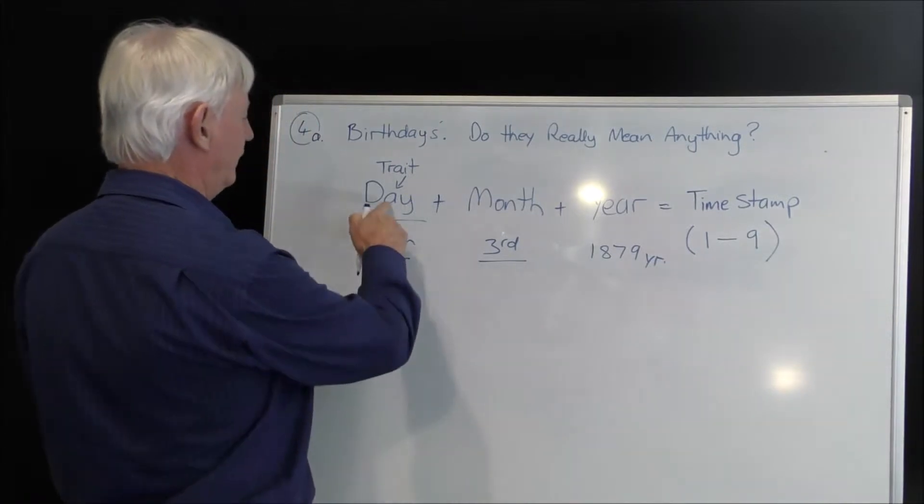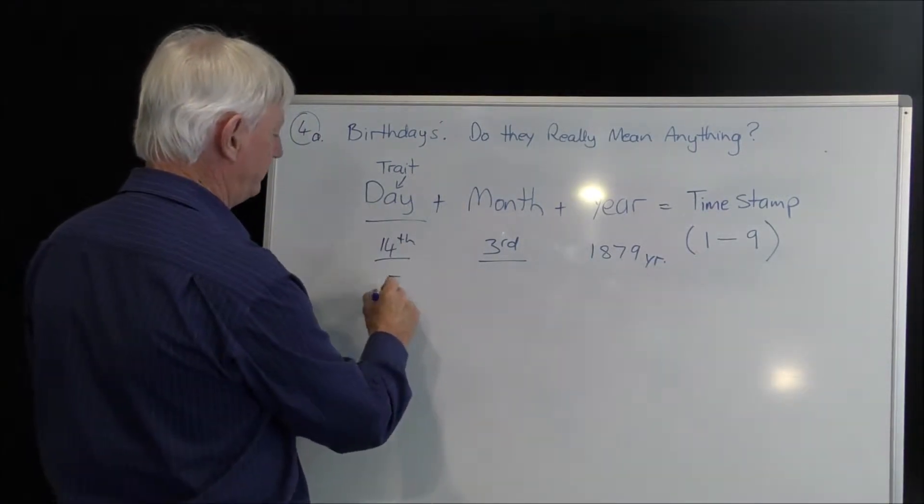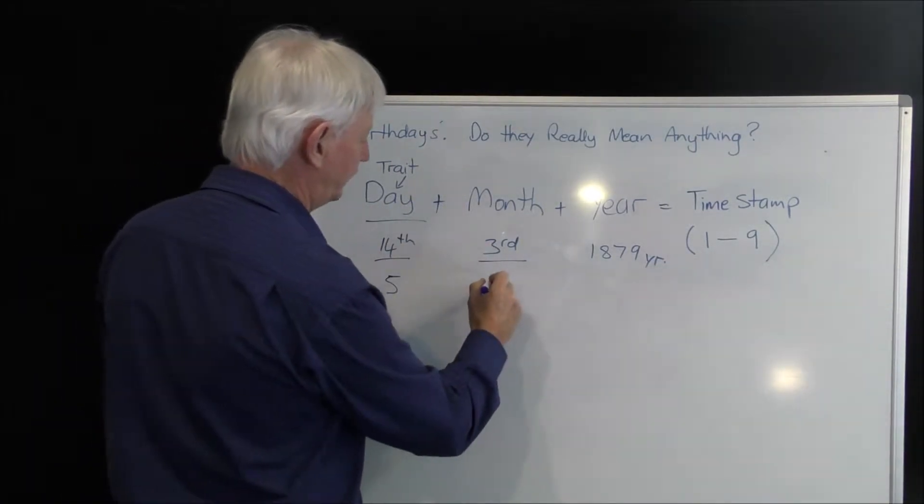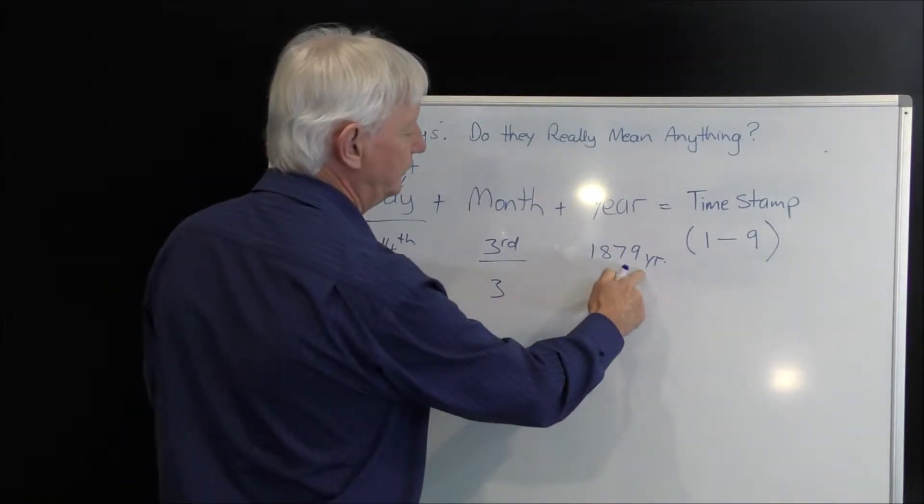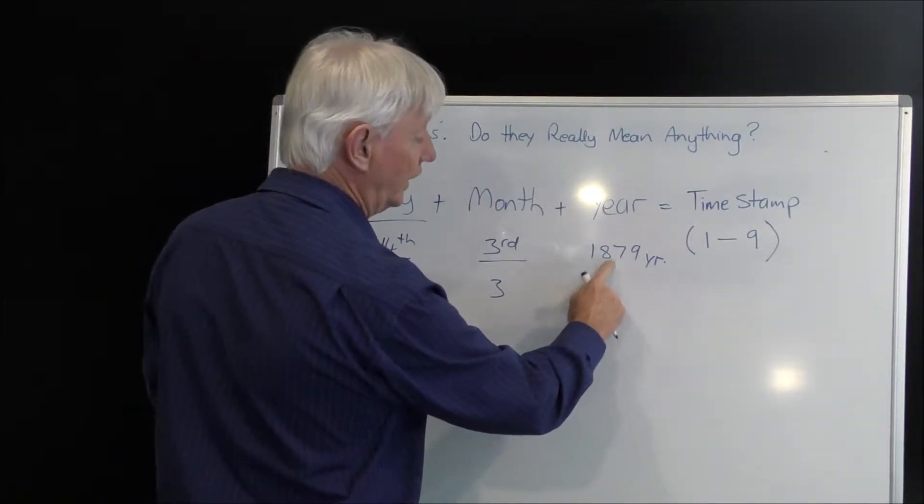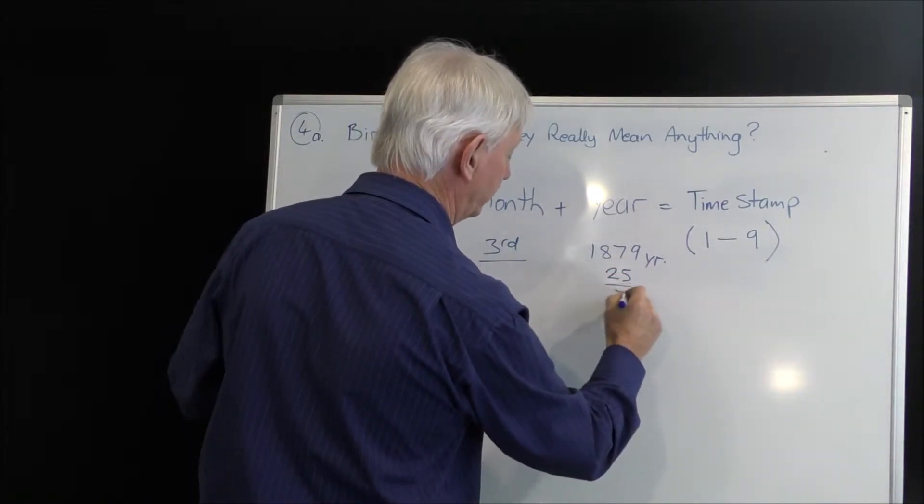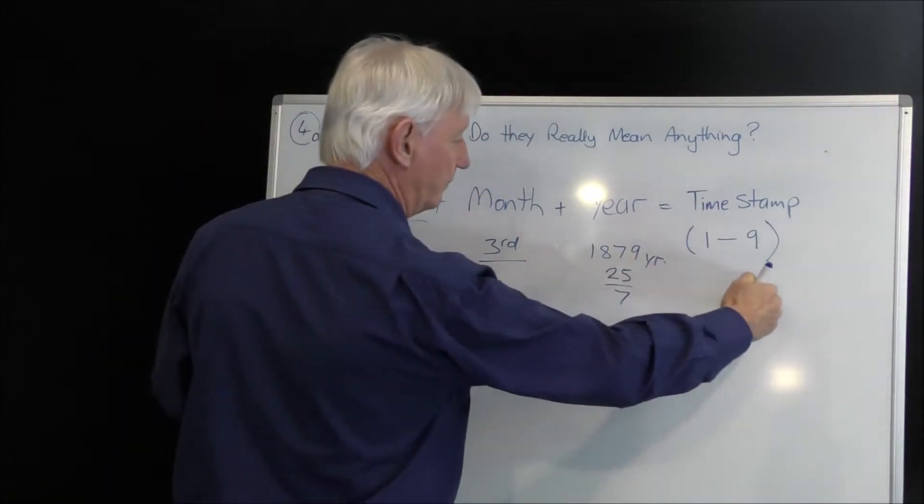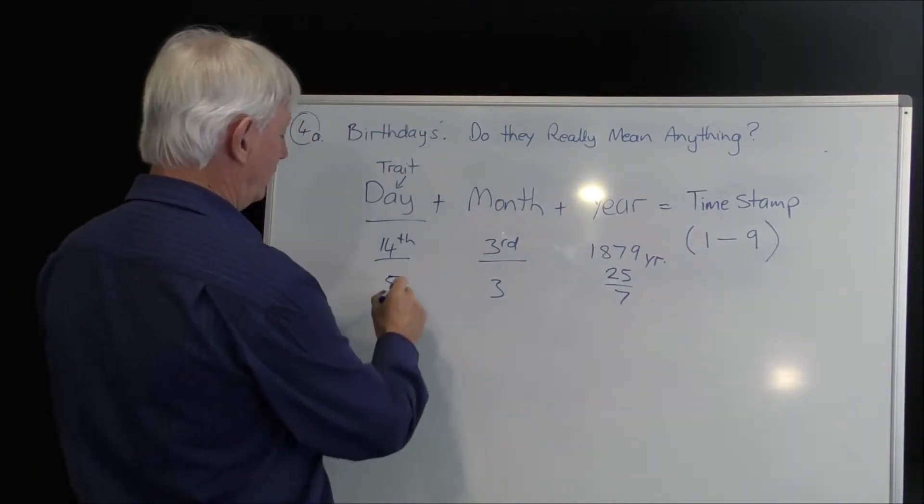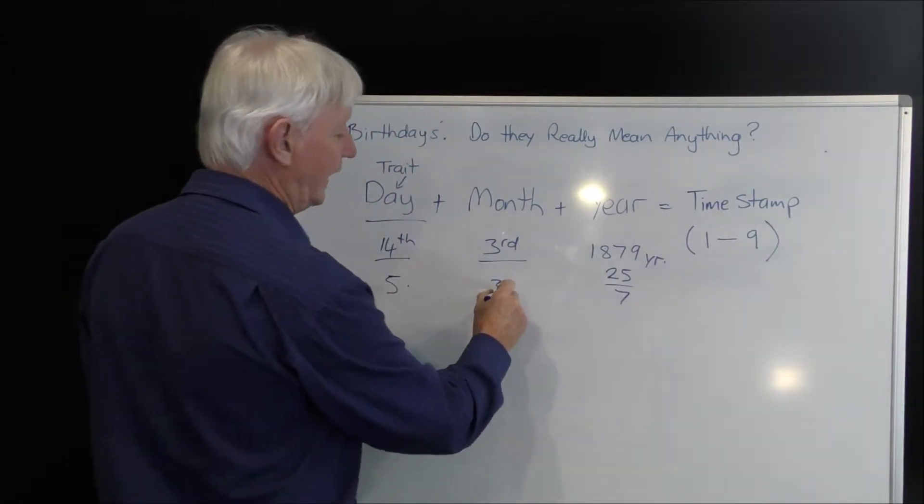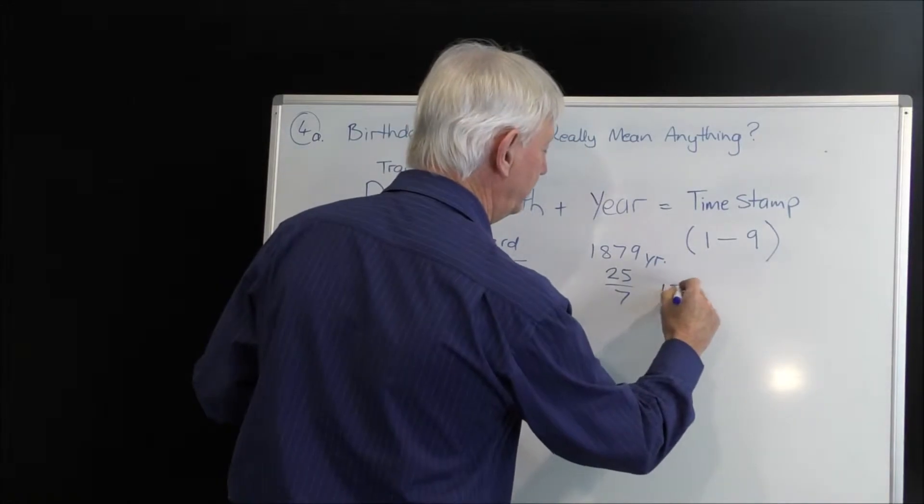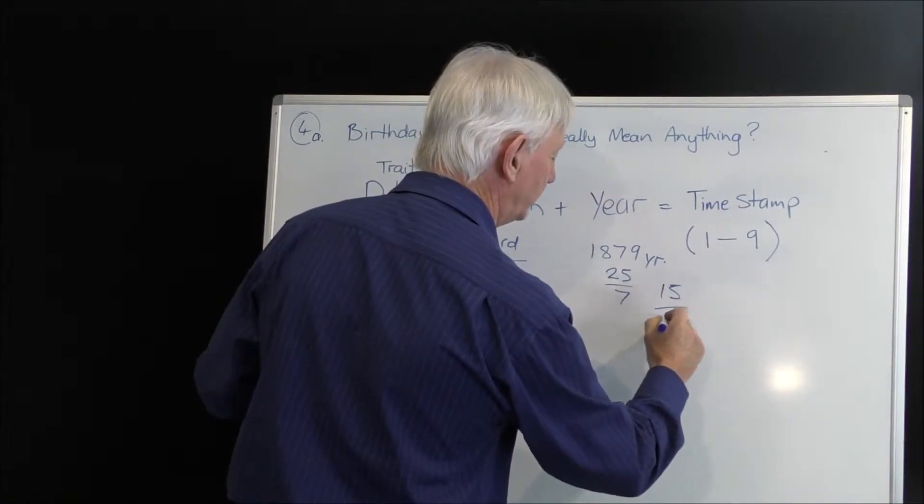But if we were to add that up: 14 adds to 5 (1 and 4), 3 is just 3, and 1879—1 and 8 is 9, 18, 25, 2 and 5 equals 7. So we could say the sum of Albert's birthday was 5 plus 3 is 8, and 7 is 15, which comes to 6.